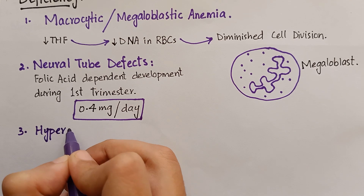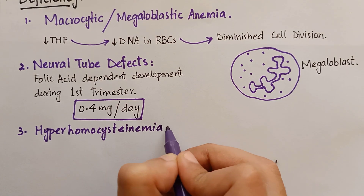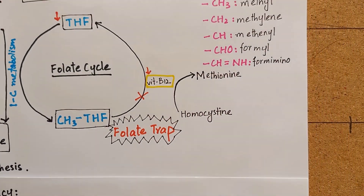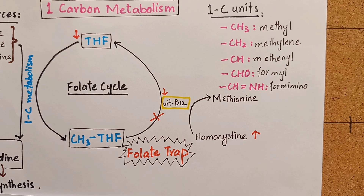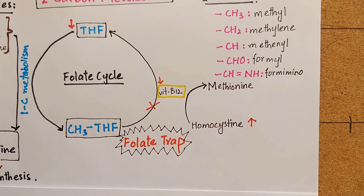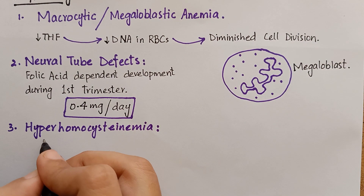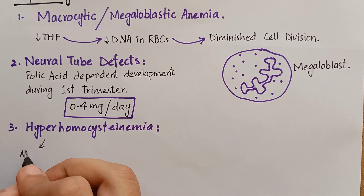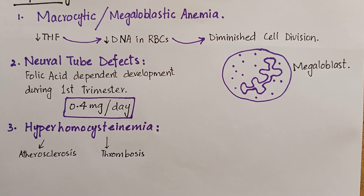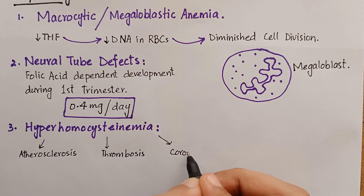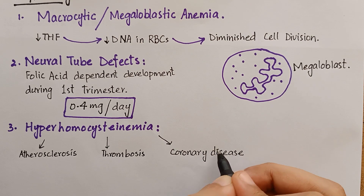Another clinical manifestation of folic acid deficiency is hyperhomocysteinemia. Folic acid deficiency inhibits the conversion of homocysteine to methionine, resulting in accumulation of homocysteine in plasma. Elevated plasma levels of homocysteine are associated with increased risk of atherosclerosis, thrombosis, and coronary heart disease. Folic acid supplementation reduces the risk of these health problems.